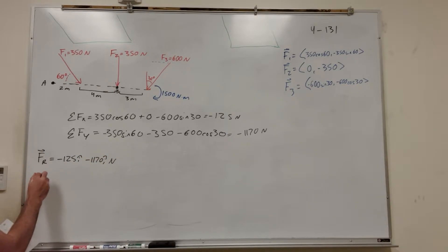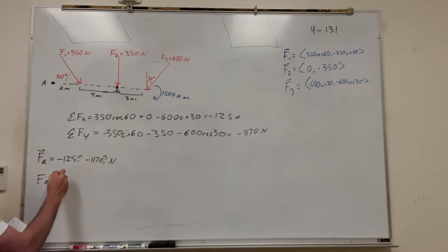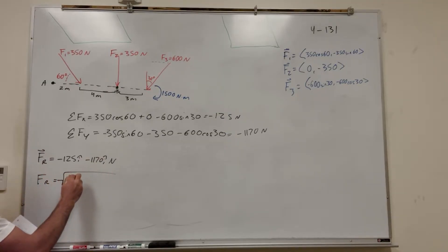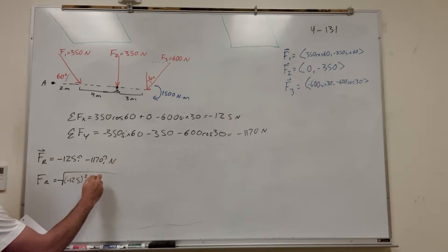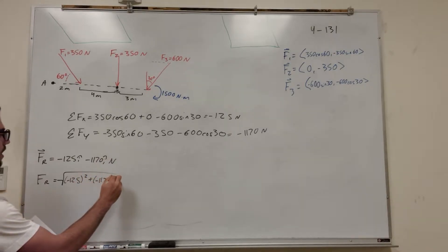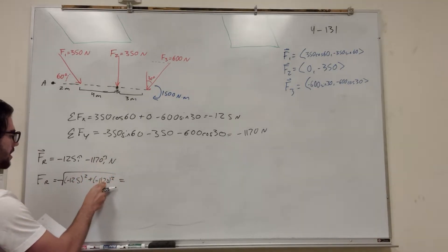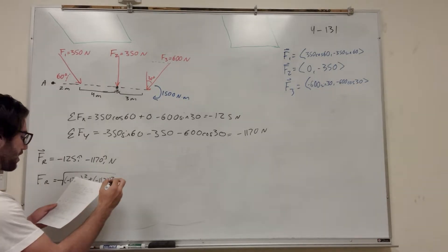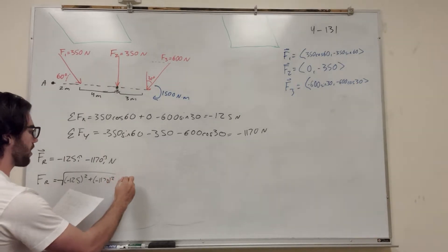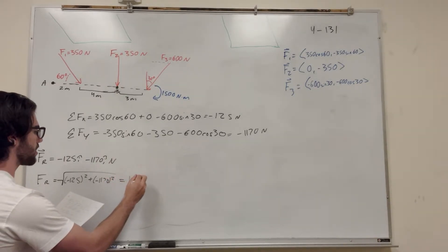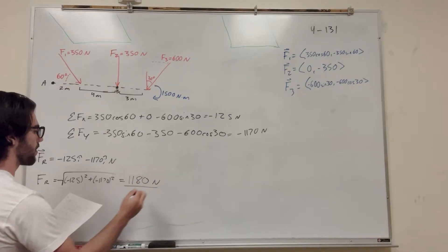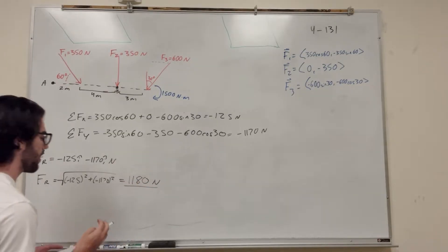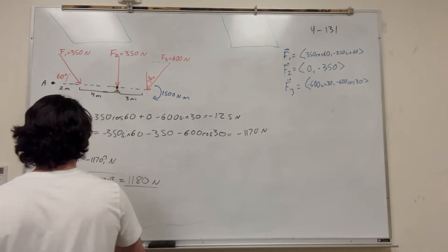To find the magnitude of the resultant force, we take the square root of negative 125 squared plus negative 1170 squared. That gives us 1180 newtons. And that's Part A.